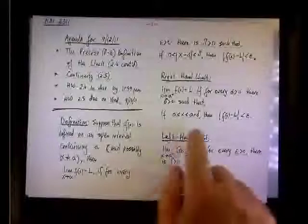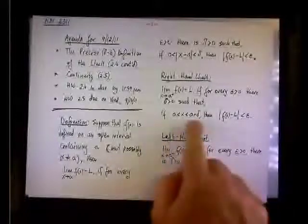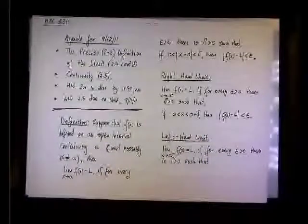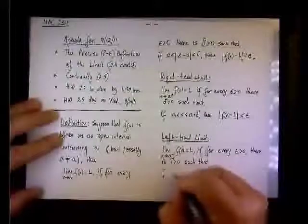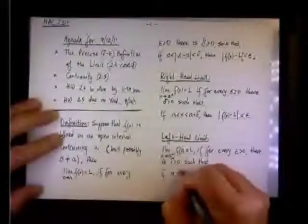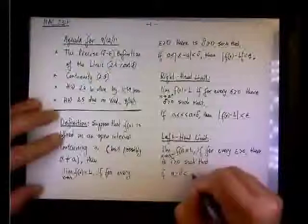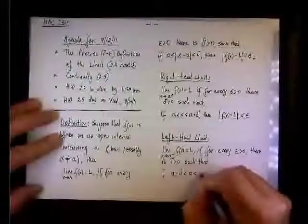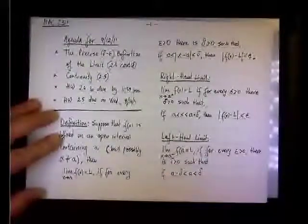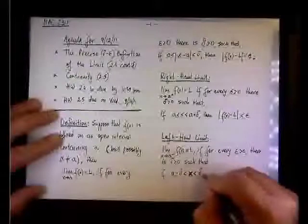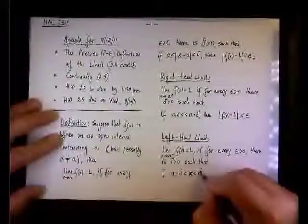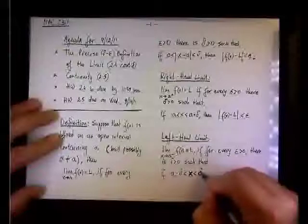So this statement is going to be modified. This time, remember, we're approaching a from the left side, so we'll have on the left of the compound inequality, we have a minus delta is less than x and x is less than a. Like so.